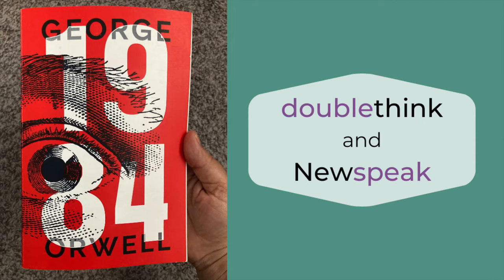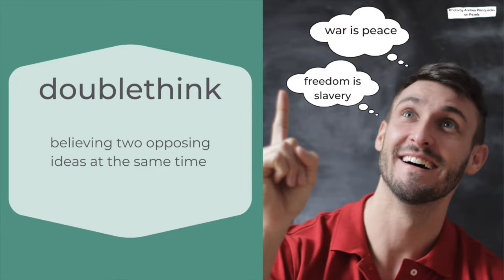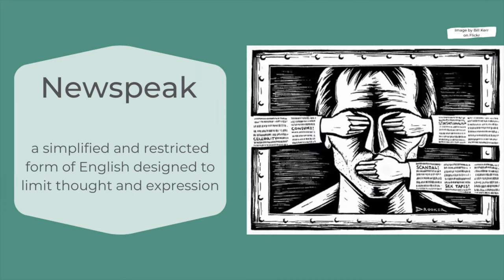Although the word doublespeak was never actually used by George Orwell, it was inspired by the two terms doublethink and newspeak in his classic dystopian novel 1984. Doublethink involves believing two opposing ideas at the same time, like the slogans from 1984: War is Peace and Freedom is Slavery. Newspeak is a simplified and restricted form of English designed to limit thought and expression.